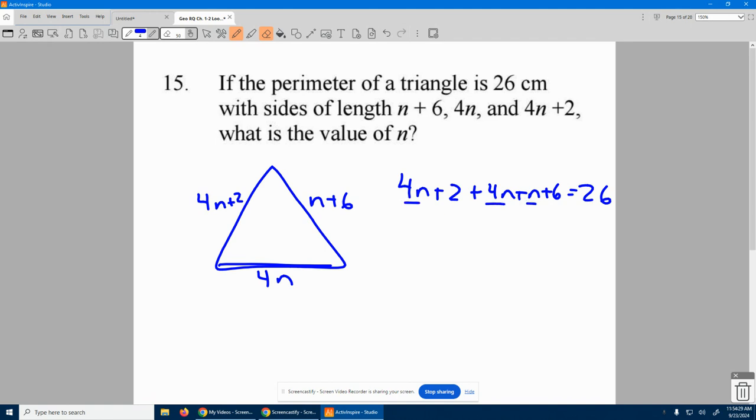4n and 4n and n is 9n. 2 and 6 is 8 equals 26. Now just move my number over to be with the other number. I have 9n is equal to 18. Divide by 9. n is 2.